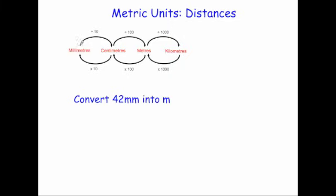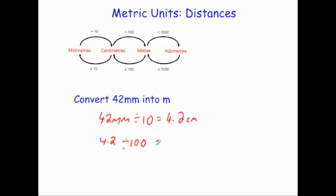Our last question: convert 42 millimetres into metres. We go from millimetres to centimetres by dividing by 10, and then from centimetres to metres by dividing by 100. So 42 divided by 10 equals 4.2 centimetres. Then 4.2 divided by 100 — move the decimal place twice — gives 0.042 metres. So 42 millimetres equals 0.042 metres.